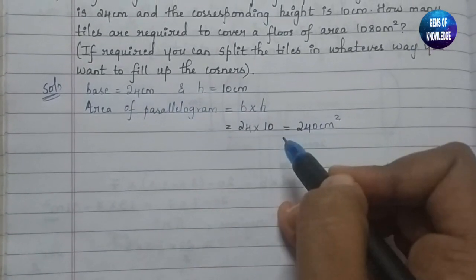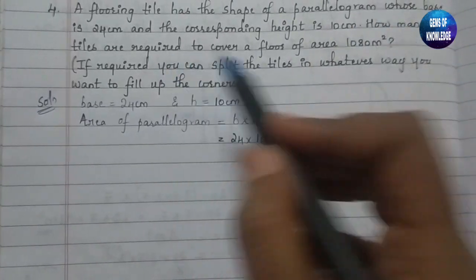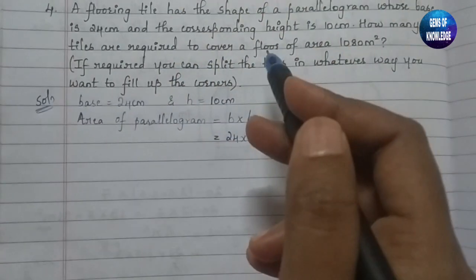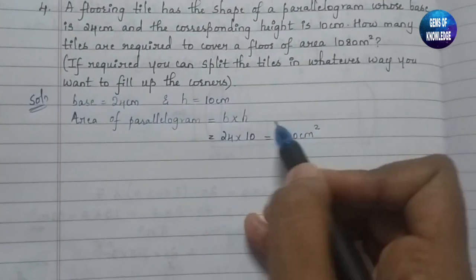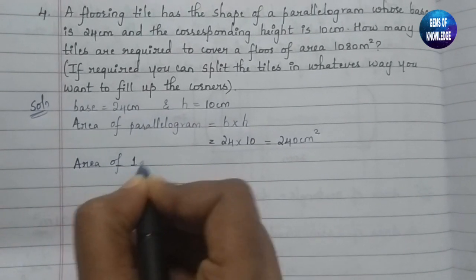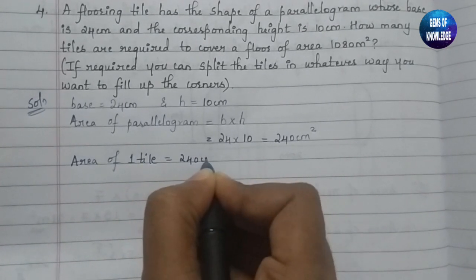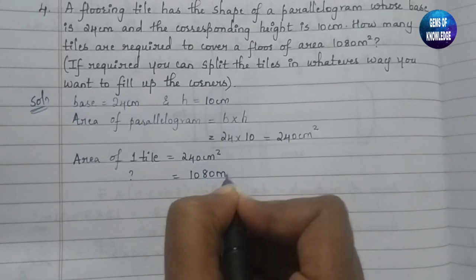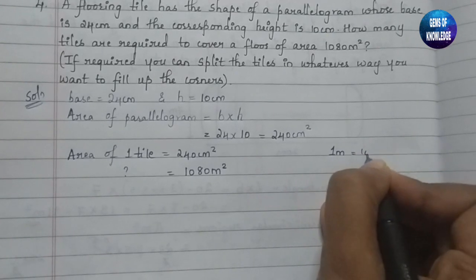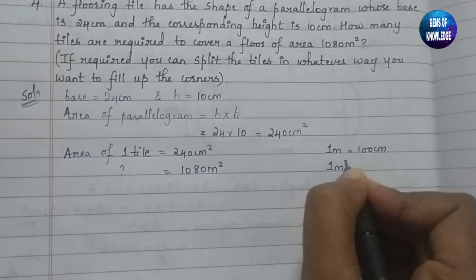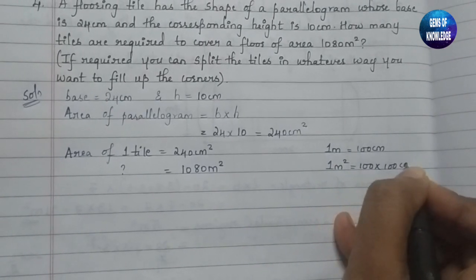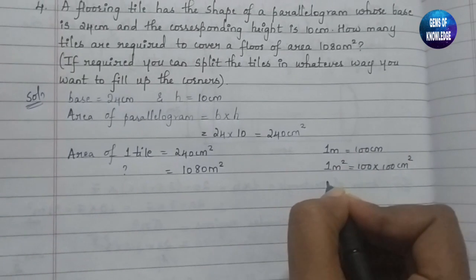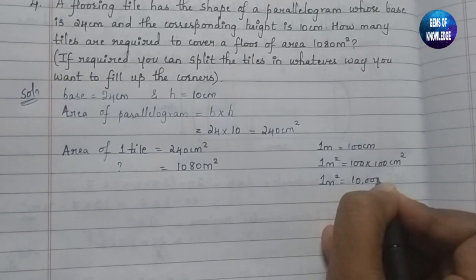The area of the parallelogram tile is 240 cm square. The area of the floor is given as 1080 metre square. The area of one tile equals 240 cm square. We need to convert units: 1 metre equals 100 cm, so 1 metre square equals 100 into 100 cm square, which gives us 10,000 cm square.